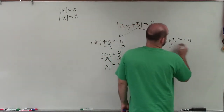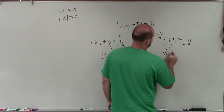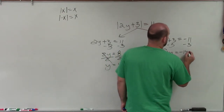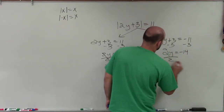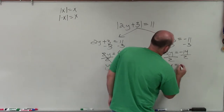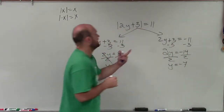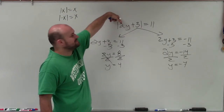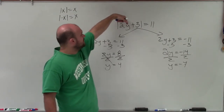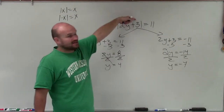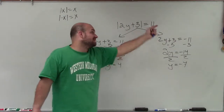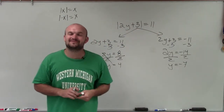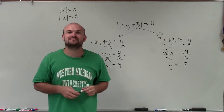Go ahead and subtract 3 from both sides again: 2y is equal to negative 14. Divide by 2, and y equals negative 7. Again, take negative 7 and plug it in: 2 times negative 7 is negative 14; add 3, which gives negative 11; and the absolute value of negative 11 is, again, positive 11. So there you go, ladies and gentlemen — I have now solved the absolute value equation. Thanks.